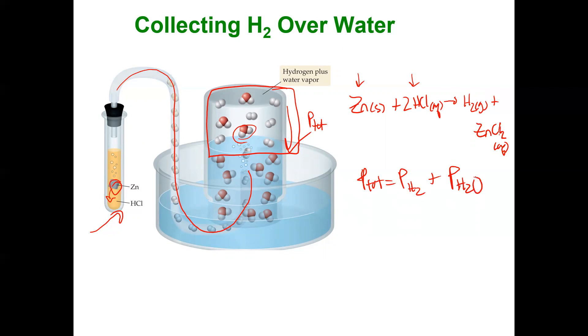I hope the concept of Dalton's law of partial pressure makes sense. It is essentially that the total pressure of a gas mixture is the sum of its parts, and you could easily calculate that by adding the individual pressures. Thanks for your time and thanks for watching.